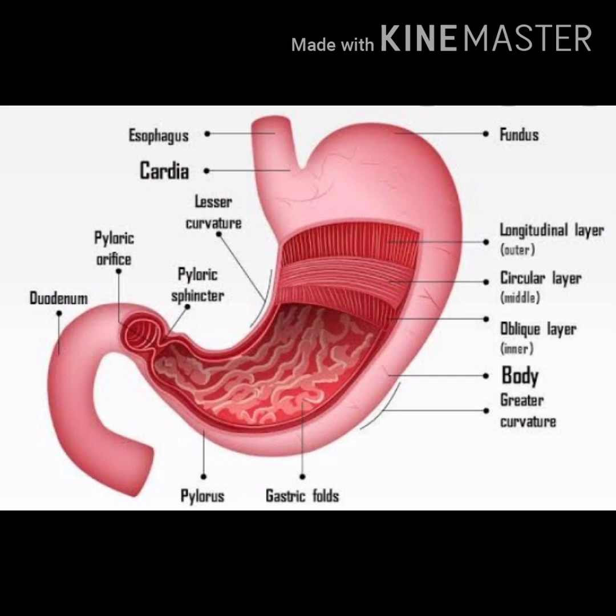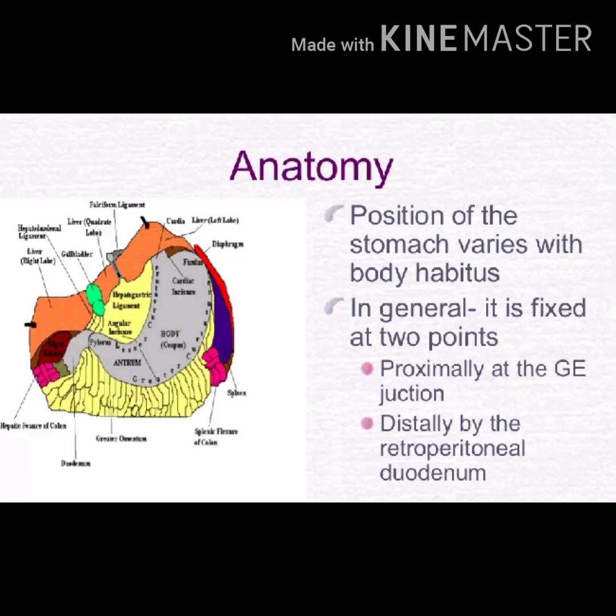The duodenum is the small intestine region. The upper portion has the lesser curvature — a small curving — while the lower portion has a greater curvature. The position of the stomach varies based on body habitus. In general it is fixed at two points: proximally at the gastroesophageal junction and distally at the retroperitoneal duodenum.